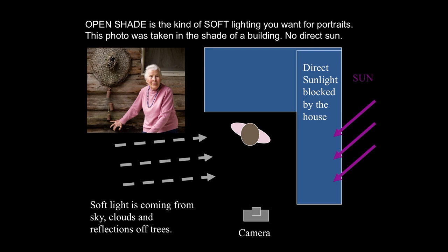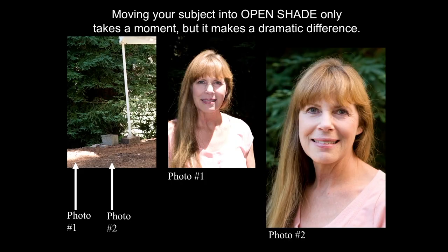Open shade means clouds, light bouncing off trees, and light bouncing off the sky, so she has no harsh shadows — very soft lighting. Moving your subject into open shade only takes a minute but makes a dramatic difference. Here's my wife in photo one — she's standing in the sun. I just asked her to move one step to the right, and she moves into the shade. You can see the improvement in the lighting. That is another example of open shade.